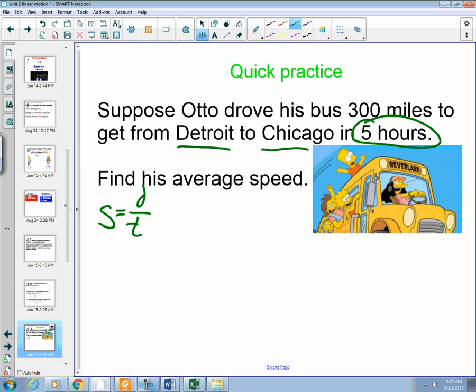So, 300 miles is our distance. 300 miles. And our time is 5 hours. 300 divided by 5, we end up with 60 miles per hour. So, that's our average speed.